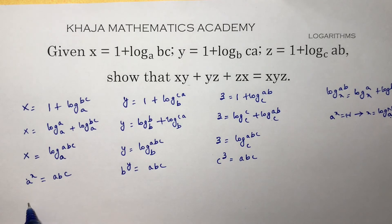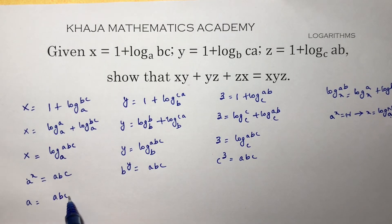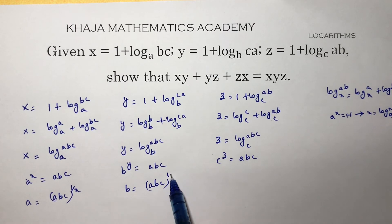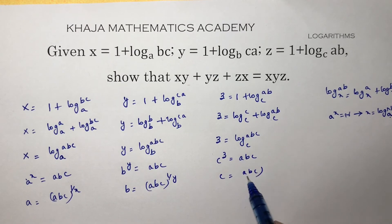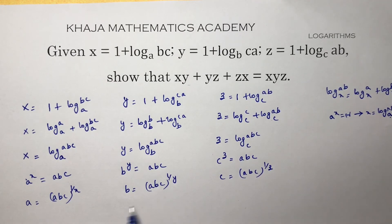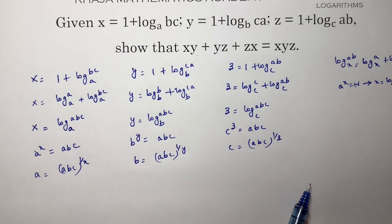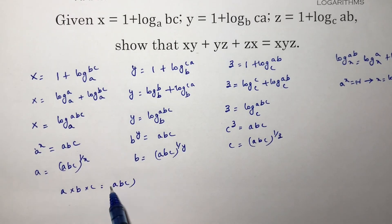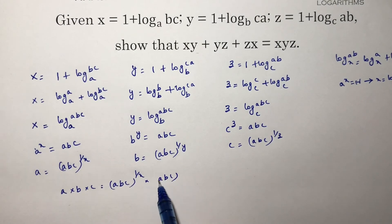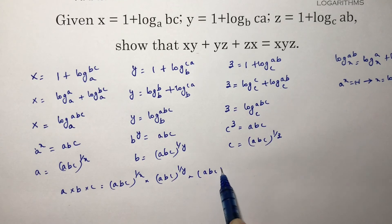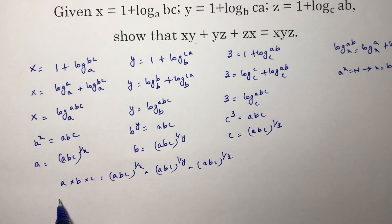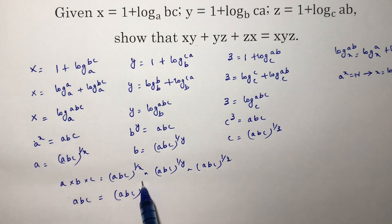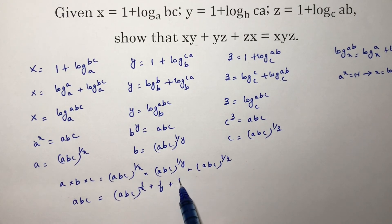Now from these three equations, A equals ABC to the power 1/x, B equals ABC to the power 1/y, and C equals ABC to the power 1/z. Multiplying A times B times C: ABC equals ABC to the power (1/x plus 1/y plus 1/z). Since the bases are the same, we can equate the powers: 1 equals 1/x plus 1/y plus 1/z.